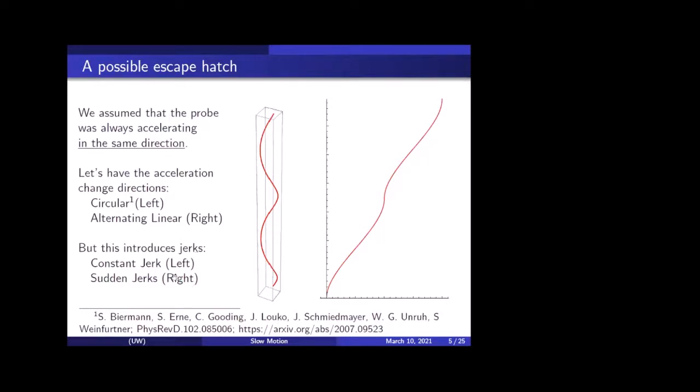So we have this circular trajectory where you move up in spacetime in a helix. Or then there's this other one, an alternating linear, where you accelerate, and then you suddenly switch to decelerating in the opposite direction, and decelerate to a stop, and then accelerate and decelerate as well. So these are two options to fix this in the same direction problem. The issue with both of these is that they introduce jerks into the detector. And by jerk, I mean third time derivative. So you don't have a constant acceleration. So we have a constant jerk on the left-hand side, and a sudden jerk on the right-hand side. We have sudden jerks at each of these inflection points.